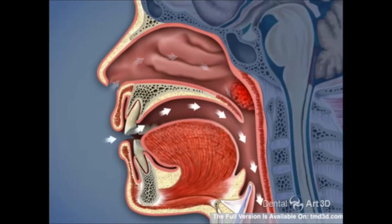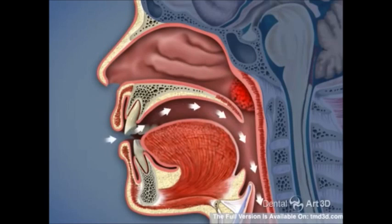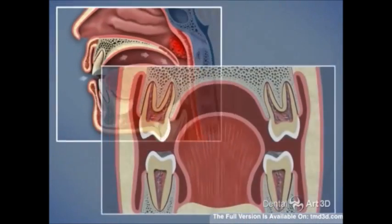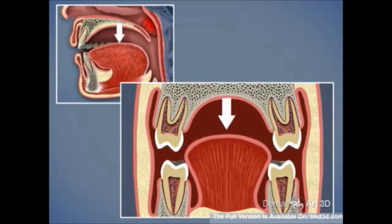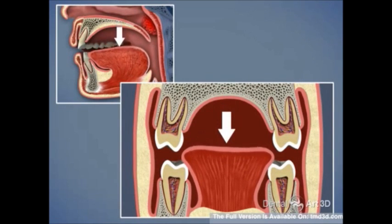Slowly, mouth breathing begins to be the primary intake of air into the body. In order to breathe through the mouth, the lower jaw comes down, the tongue comes off the palate, and settles on the lower teeth.